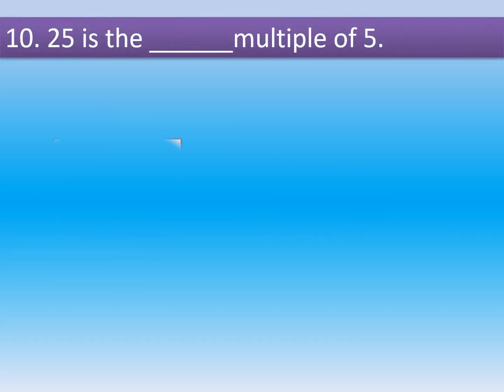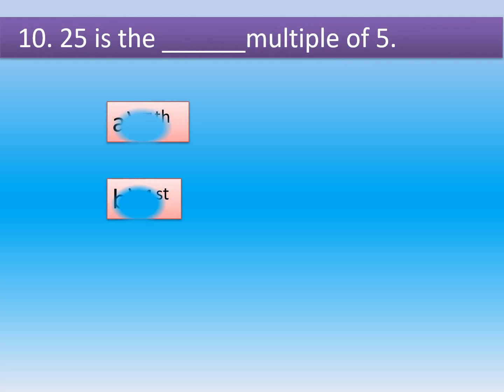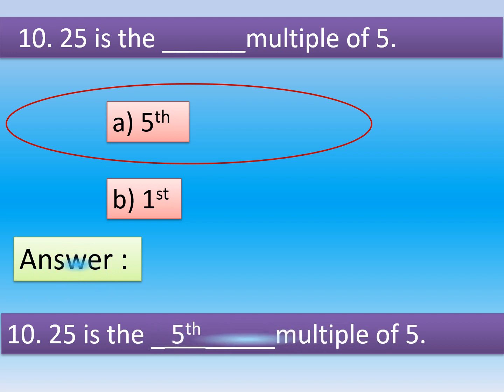Question number 10: 25 is the dash multiple of 5. Option A, fifth. Option B, first. The correct option is Option B.